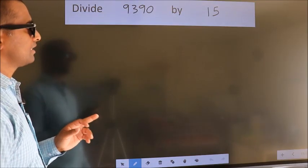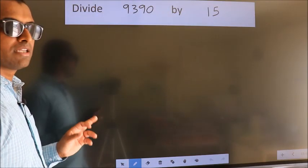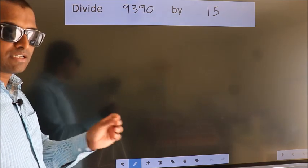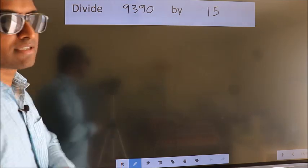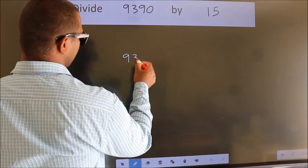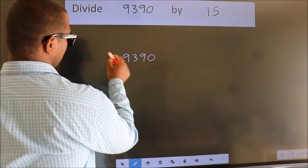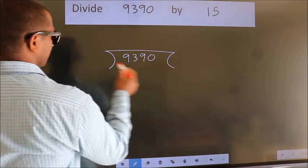Divide 9390 by 15. To do this division, we should frame it in this way: 9390 here, 15 here.